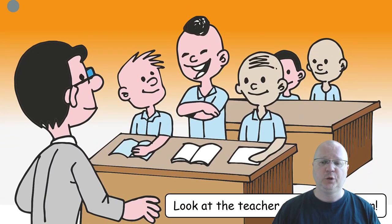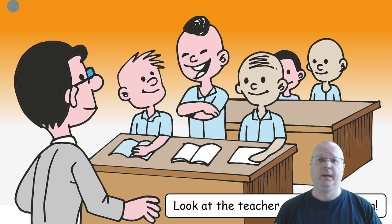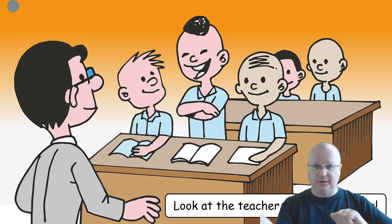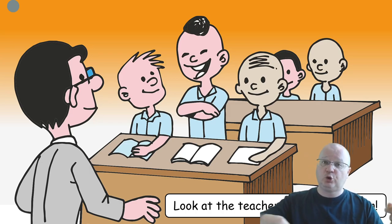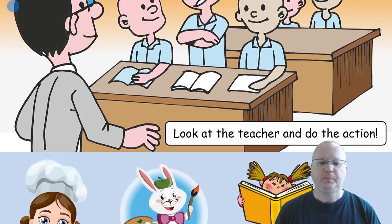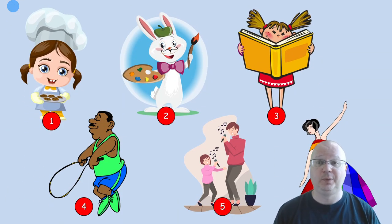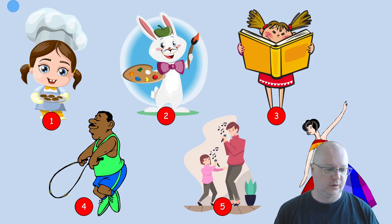The next game reinforces the sentence structure — a TPR game. Ask your students to stand up and look at the teacher. You say the word or sentence and they do the action. For example, when you say dance, the whole class dances; when you say skip rope, everyone skips rope. Then you can swap roles — you do the action and students say the word. It's a good drill that also gets students moving. Display this slide during the game so students have visual cues to help remember words they don't know as well.